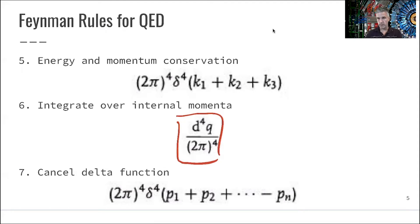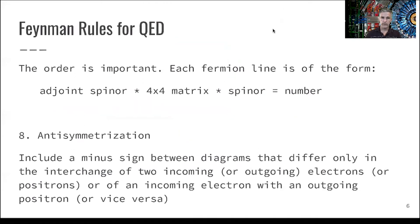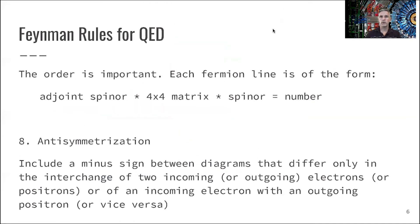In our toy experiment, the order of things didn't matter. Everything we had was scalar numbers. Here, we have a more complicated problem. There's an importance in the order in which we execute things. What we want to do is form fermion lines.